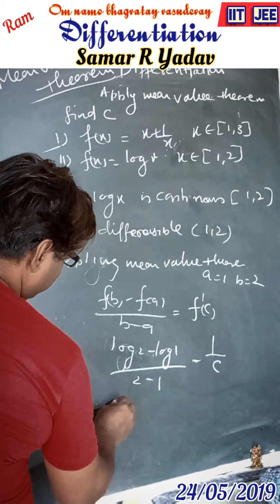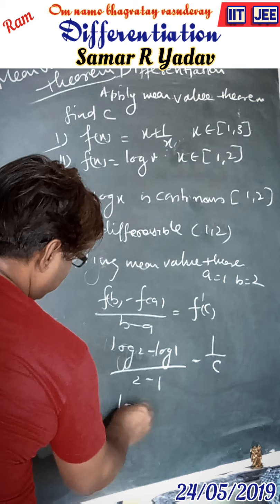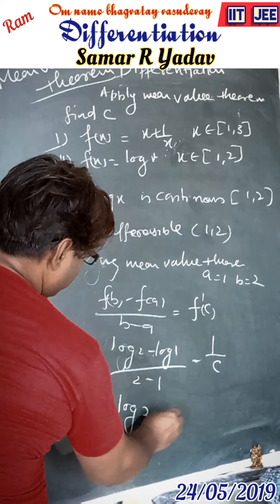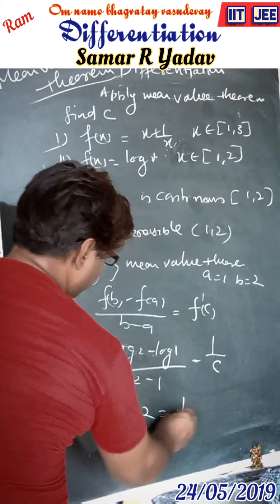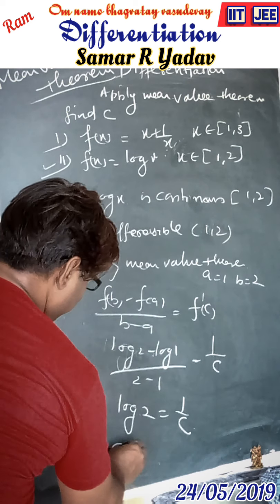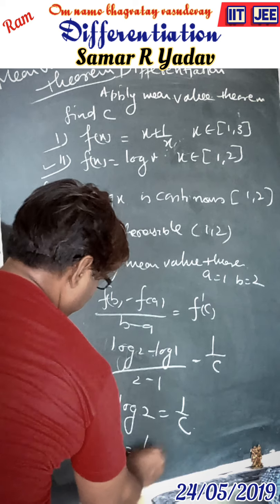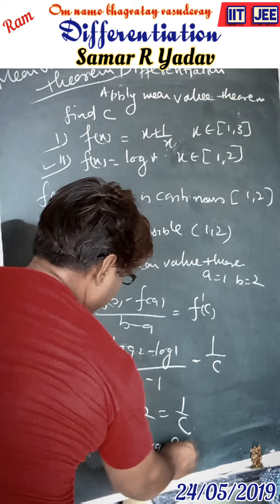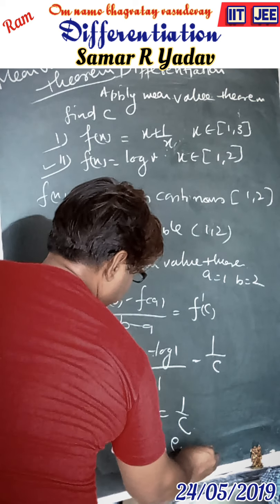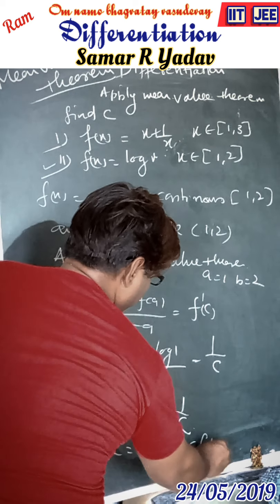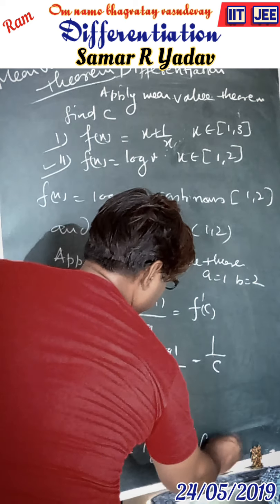Therefore, log 2 = 1/c. Therefore, c = 1/log 2, which belongs to the interval [1, 2]. This completes the solution to the first problem.